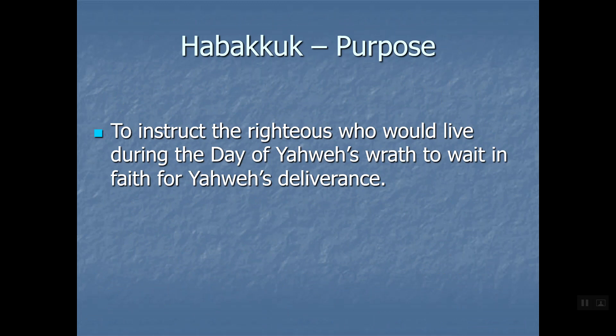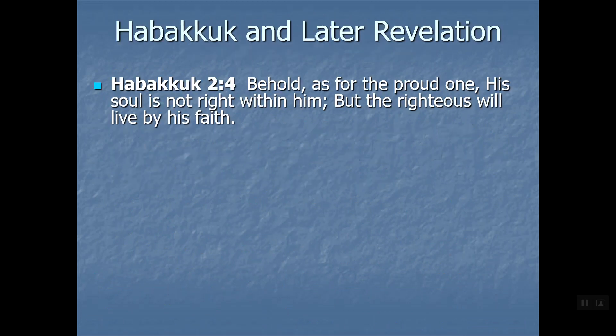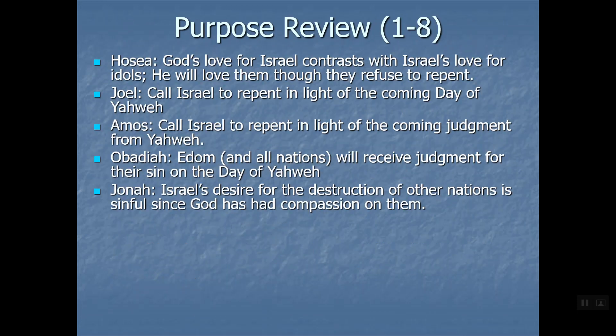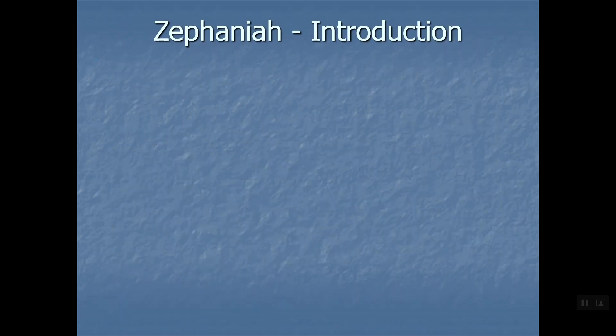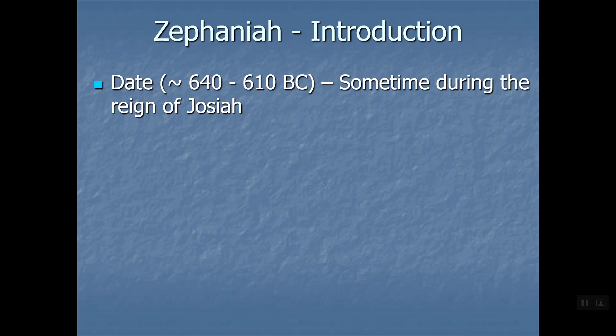God answers Habakkuk: I'm about to do something you wouldn't believe - raising up the Chaldeans (Babylonians), that fierce and impetuous people who march throughout the earth. Their horses are swifter than leopards and keener than wolves. They mock at kings; rulers are a laughing matter to them. Then Habakkuk complains again: how can you use a wicked nation against your people? Your eyes are too pure to look on wickedness - why are you silent when the wicked swallow up those more righteous than they? God answers: trust Me, wait. The righteous will live by faith. The centerpiece is how the righteous live.